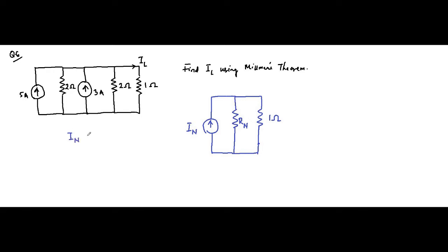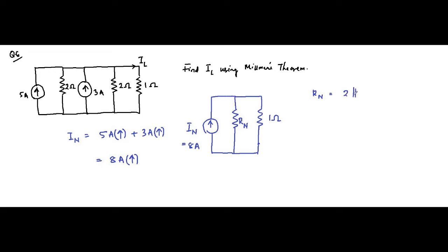IN will simply be 5 ampere in this direction, plus 3 ampere because it is in the same direction — so they will be added. That gives 8 ampere, with this being the current direction. So Norton current is equal to 8 ampere. Norton resistance is simply 2 ohm in parallel with 2 ohm, which equals 1 ohm. So RN is equal to 1 ohm.